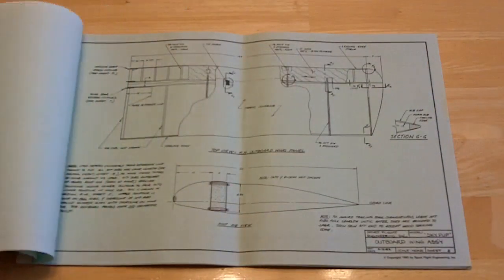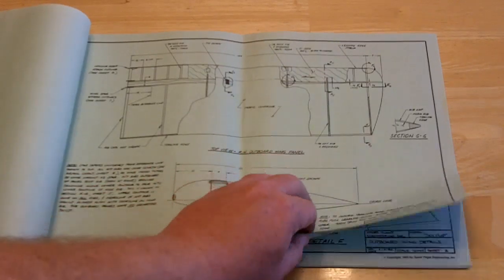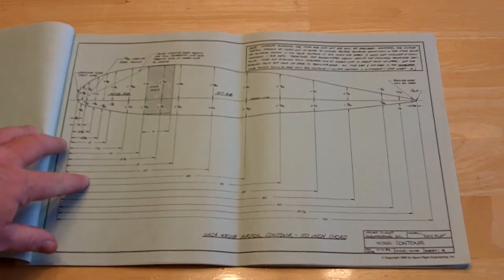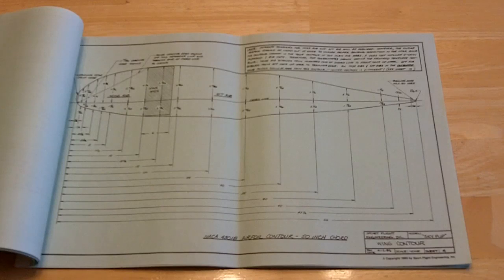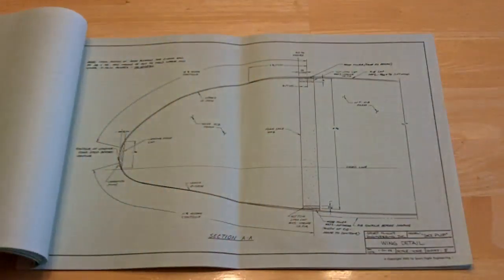As you go through the plans, you can see that the details are pretty nice. Everything is clearly explained. A lot of airplanes give you a template which shrinks and whatnot, and it's hard to trace. Here they give you the actual measurements so you can calculate it out and guarantee that the airfoil is accurate.